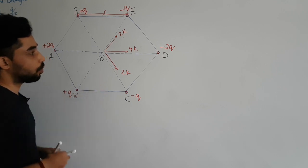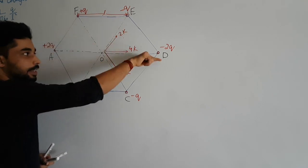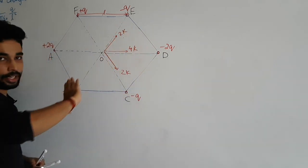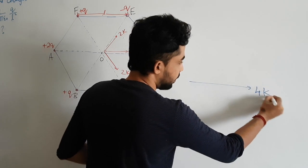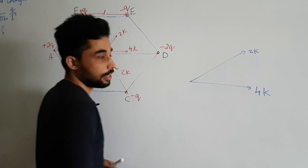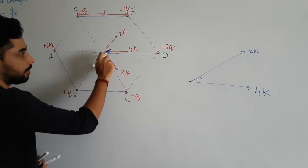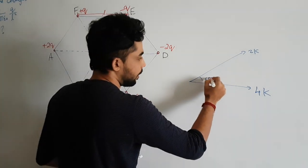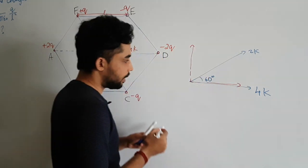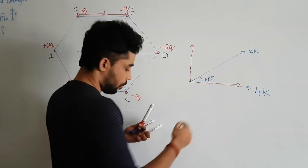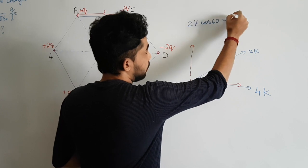Now we have three field contributions: 4k, 2k, and 2k, but they point in different directions, so we cannot simply add them. We need vector addition. The angle between adjacent directions is 60 degrees since the full 360 degrees is divided equally among six vertices. Resolving the 2k fields: the horizontal component of each 2k is 2k cos 60 equals 2k times 1/2 equals k.